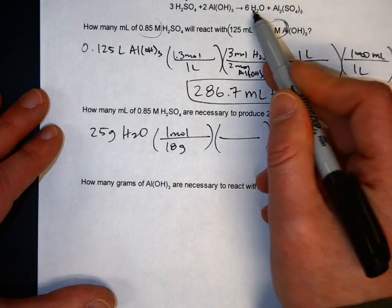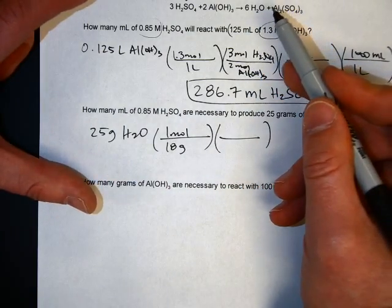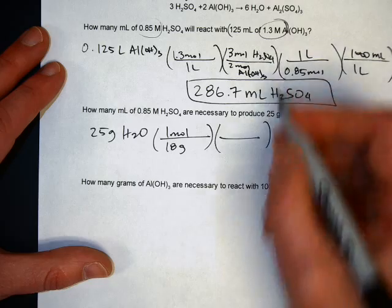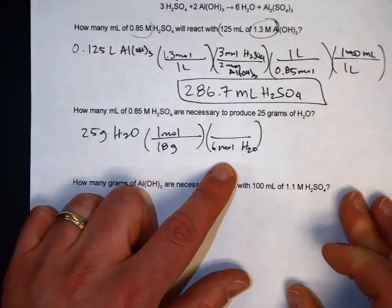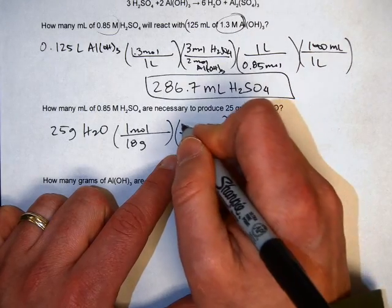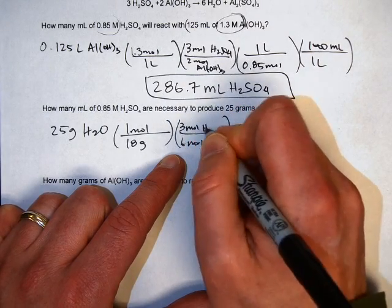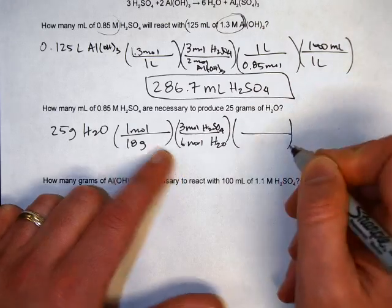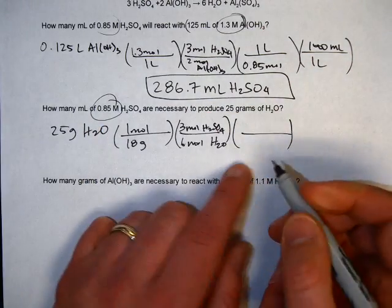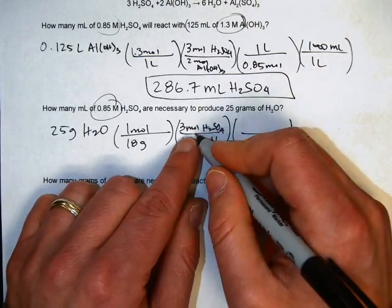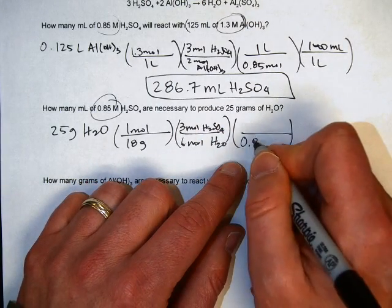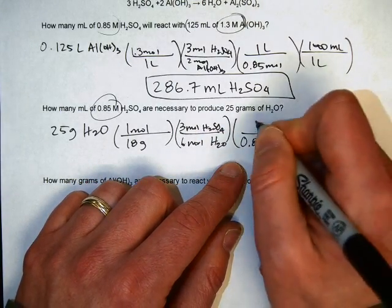Then use the mole ratio from water to H2SO4. It's a six to three ratio. So six moles of water will give you three moles of H2SO4. And then the 0.85 again, we use that to get from moles to liters. But moles on top here, so put your moles on bottom. So 0.85 moles in one liter.